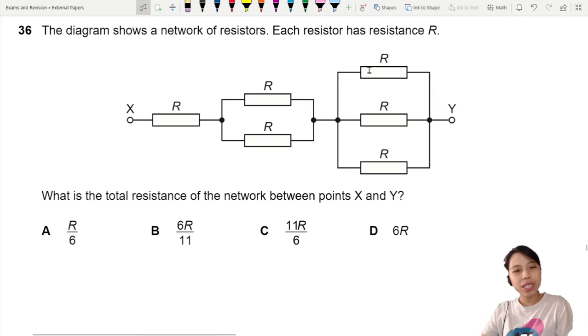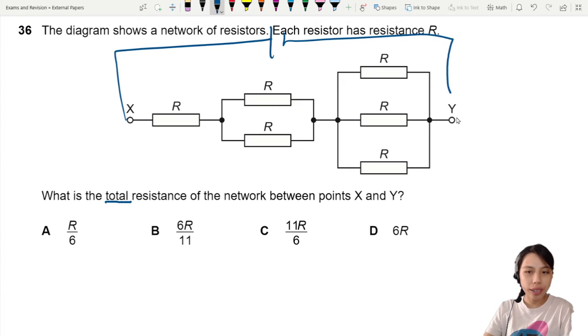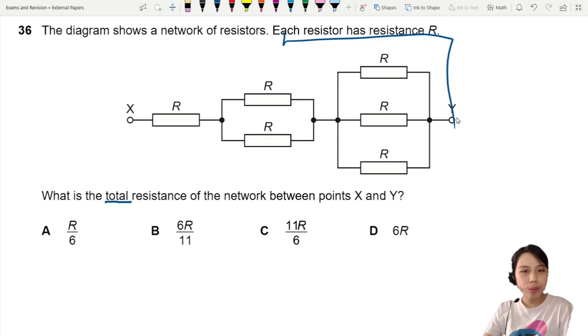The diagram shows this interesting network of resistors, all with the same resistance. What is the total resistance between point X and point Y? If you're finding the total or combined resistance, just assume that you connect to a battery like this. But this one's not too complicated, so we can still kind of see it for ourselves.